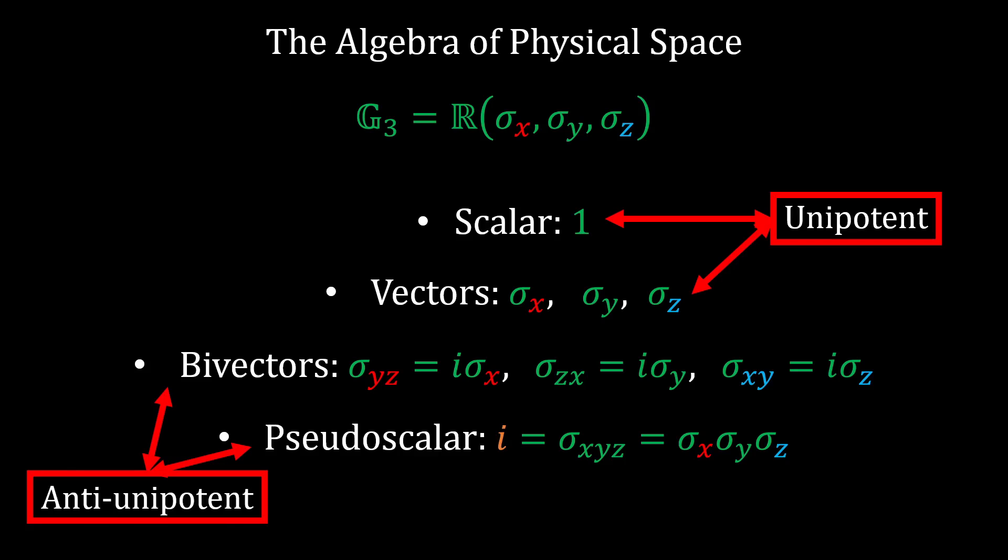The scalar and vectors are unipotent, while the bivectors and pseudoscalar are anti-unipotent. Don't worry my fellow Americans, these are not political orientations, but terms invented by the math goblins to make themselves happy. Unipotent literally means squaring to positive one, and anti-unipotent means squaring to negative one. I could just call them positive and negative squares, but I've got to prove that I went to university somehow.